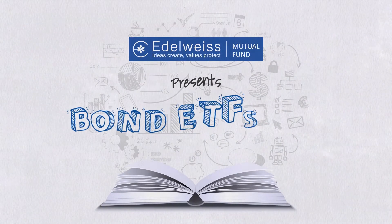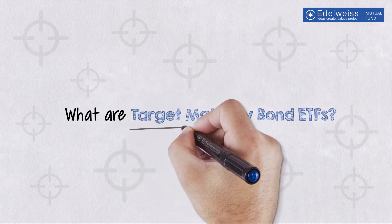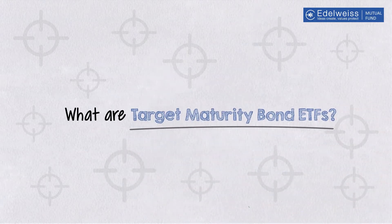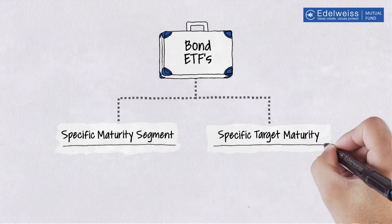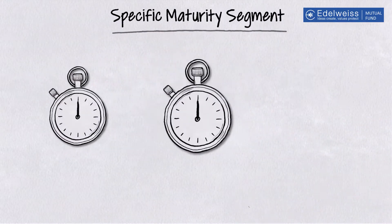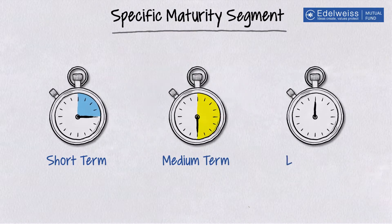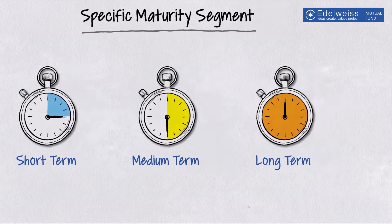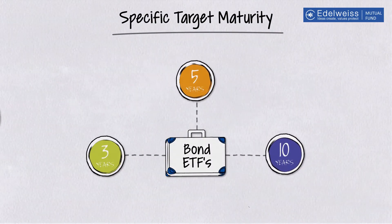Bond ETFs 101: What are Target Maturity Bond ETFs? There are two different structures of bond ETFs. Bond ETFs which track specific maturity segments like short term, medium term and long term, and bond ETFs with a specific target maturity.